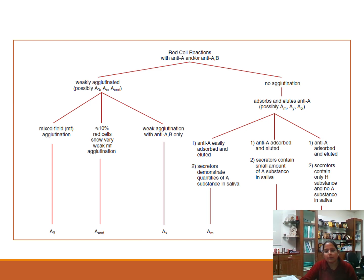Weak A subgroups can be serologically differentiated using forward grouping for A, H antigens with anti-A, anti-AB, and anti-H antisera; reverse grouping for ABO isoagglutinins; and checking for the presence of anti-A1. Absorption-elution studies with anti-A and saliva studies to detect the presence of A and H substances are also used.